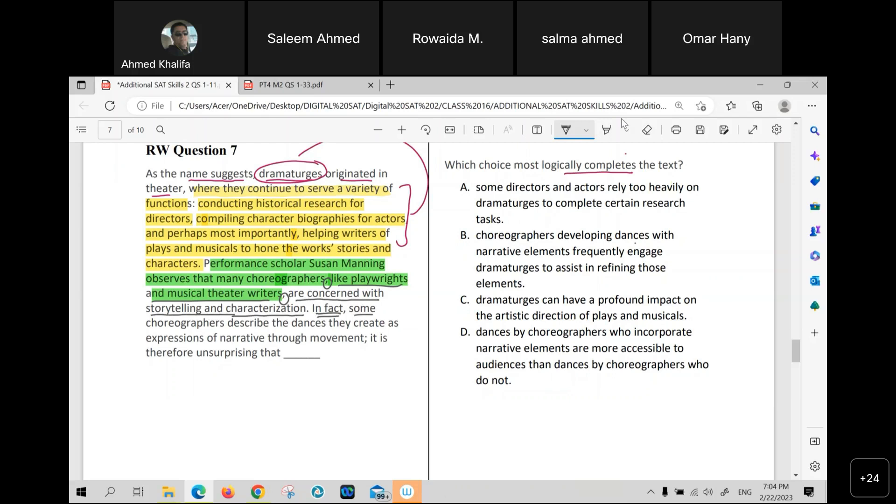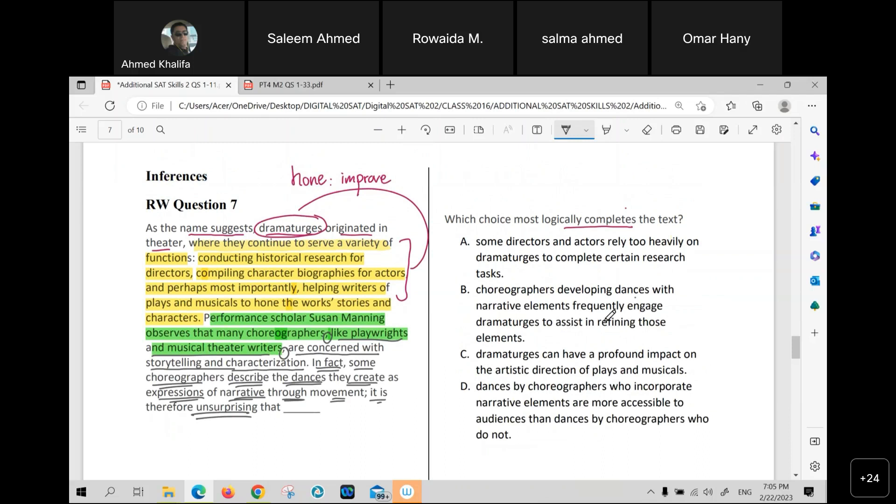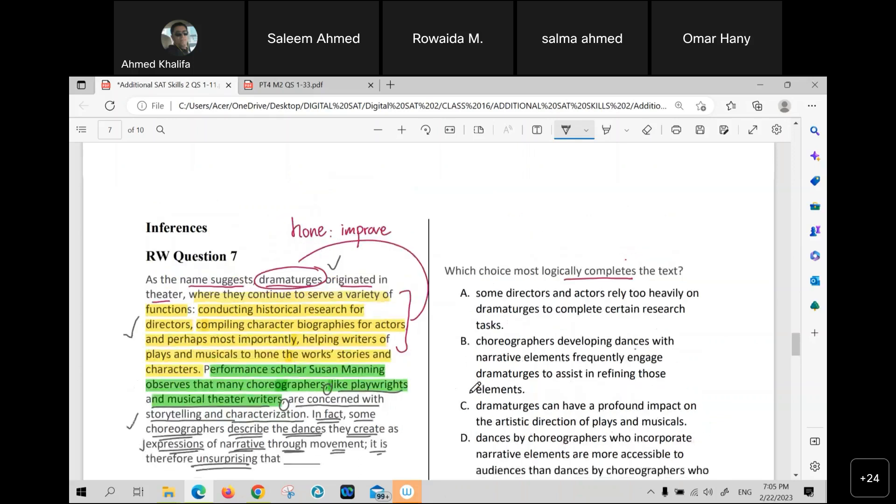Believe it or not, choreographer just composes the sequence of steps and moves in dancing. Is concerned with what, teacher? Concerned with storytelling and characterization. As if they are what? Playwrights or writers. In fact, some choreographers describe the dances being created as expressions of narrative through movements. And it's a mix of both? Yes. It is, therefore, unsurprising, that what? That what? What can complete the text? And remember, we mentioned the dramaturgist for a reason.